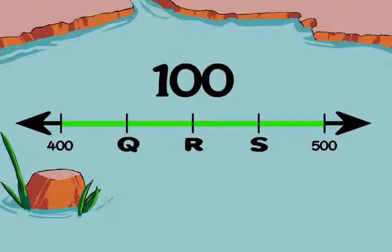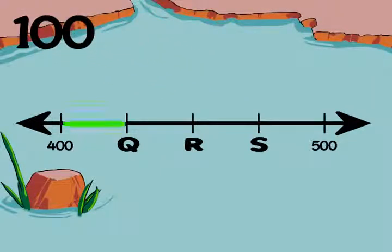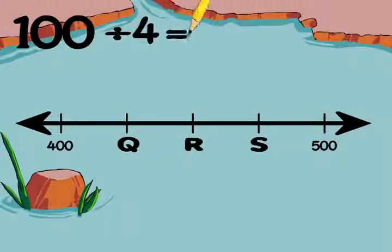Step two, count the segments in between and find each length. Here we see four equal segments between the benchmarks. 100 divided by 4 is 25, so each segment represents 25.